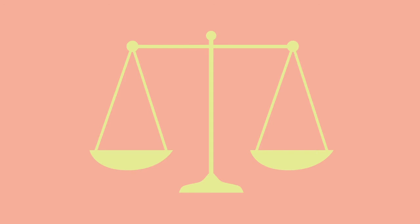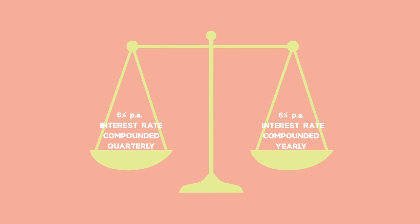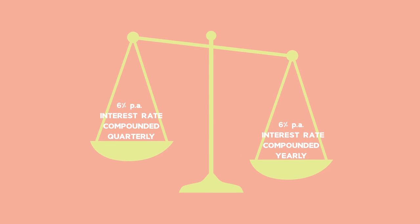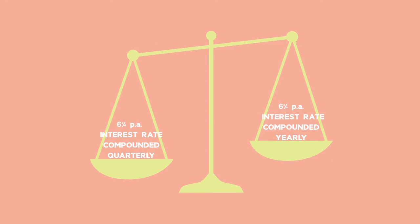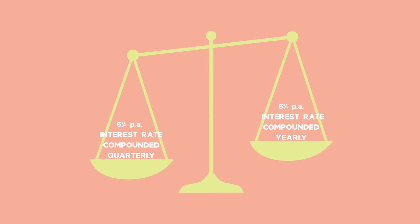We need a way of comparing interest rates. For example, if there's an annual interest rate of 6% compounded quarterly, is that higher or lower than an interest rate of 6% per annum compounded yearly?